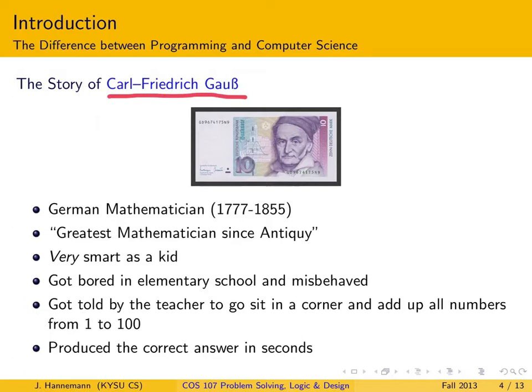Gauss was very smart as a kid, not only as an adult. Like many smart kids, he got bored in elementary school and misbehaved. At one point his teacher had it, and told him to go sit in a corner and add up all numbers from 1 to 100. He produced the correct answer within seconds without even sitting down. The point is that Gauss, like many humans, are good at detecting patterns. He detected a particular pattern that allowed him to basically bypass all the work by smartly exploiting that pattern. This is really what the life of a computer scientist actually looks like.